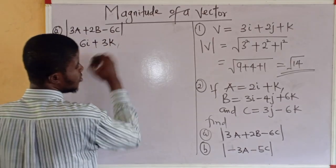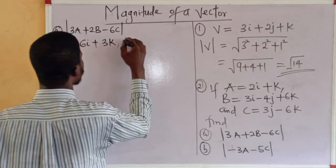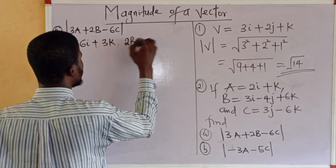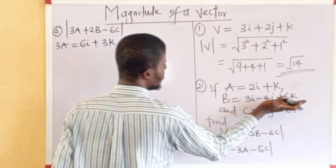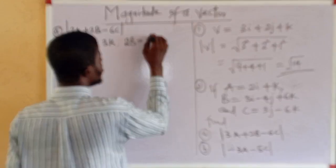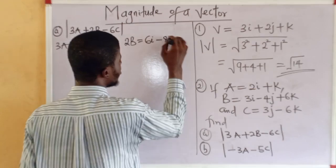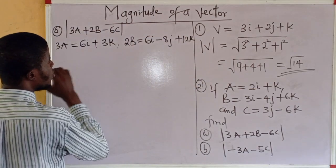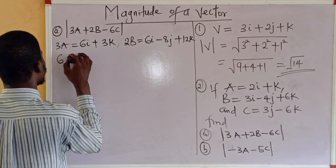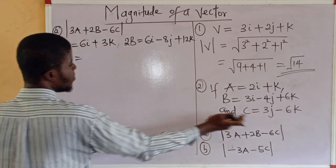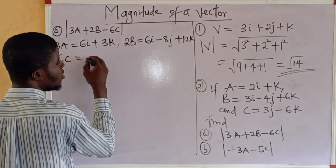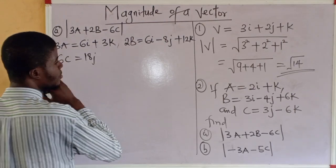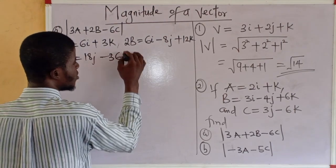So, for 2b, we are going to multiply everything here by 2. That would be 6i - 8j + 12k. And for 6c, we have, multiply everything by 6. 3 times 6 is 18j minus 36k.